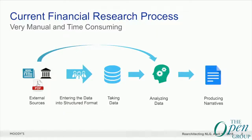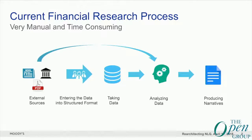This is how our current financial research process looks. Our analysts essentially gather information from structured and unstructured sources. An example of an unstructured source can be news or insights on what will happen in the next year — for example, Brexit. A structured source can be our internal database. They analyze the data, produce insights, and in the end write reports describing the output of that analysis. This is a very manual and time-consuming process.